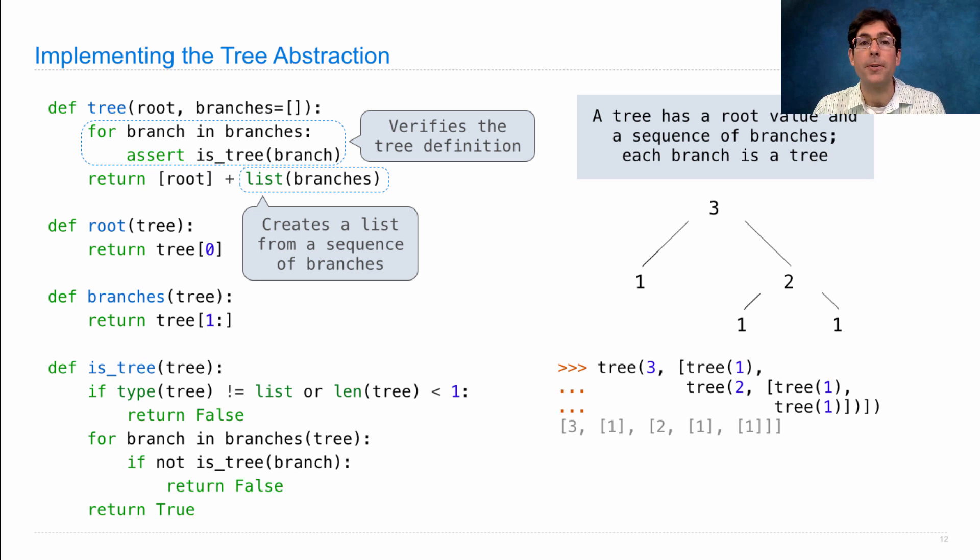Now, isTree is a recursive function. IsTree takes in a tree, makes sure that it's a list, makes sure that its length is at least one, because there has to be a root value. If either of those is false, then it will return false. This is not a tree. A tree is only a tree if for every branch, the branch is a tree. So, if any branch is not a tree, then we return false. If it has the right structure and every branch is a tree, then we return true.